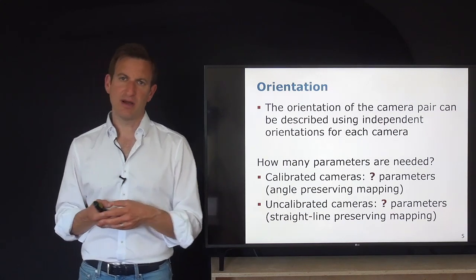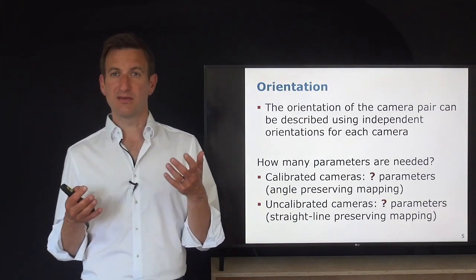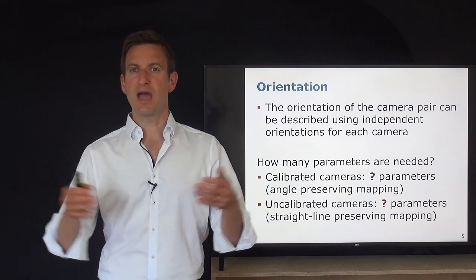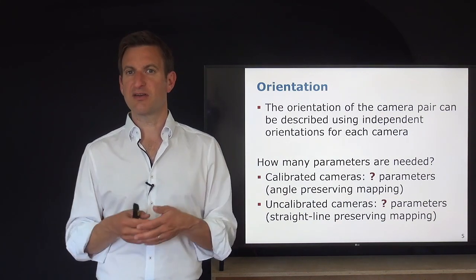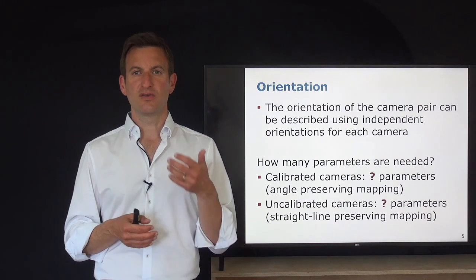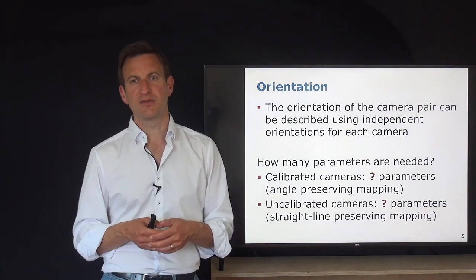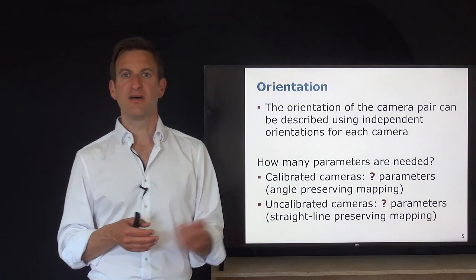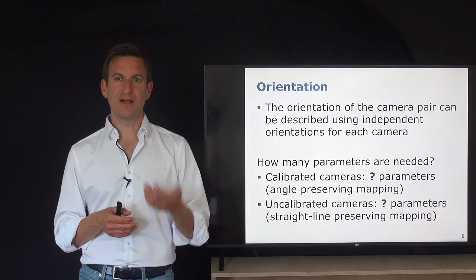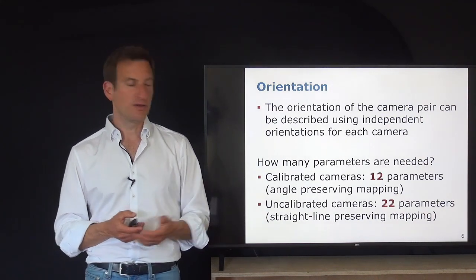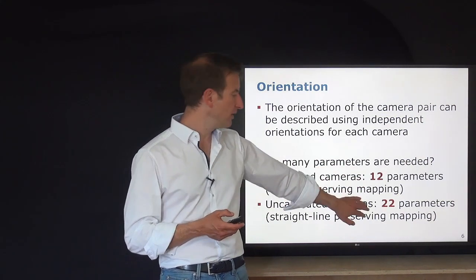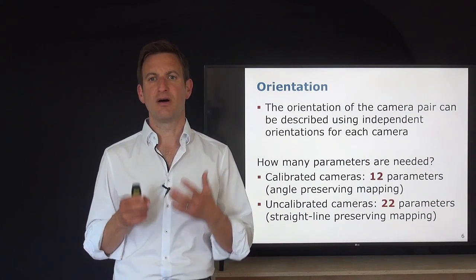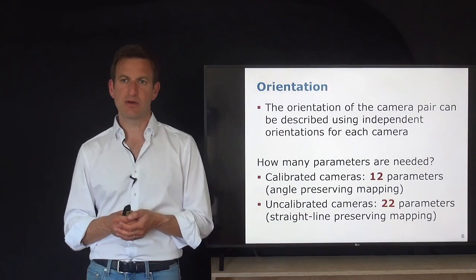For the uncalibrated camera, we may not assume both cameras share the same calibration matrix since it could be a stereo pair with different matrices. The calibration matrix has five parameters, so we have ten more parameters for the uncalibrated case — five additional per camera. That gives 12 + 10 = 22 parameters. In the calibrated case we have 12 parameters (6+6), and in the uncalibrated case 22 parameters (11+11) to describe the camera pair mapping.